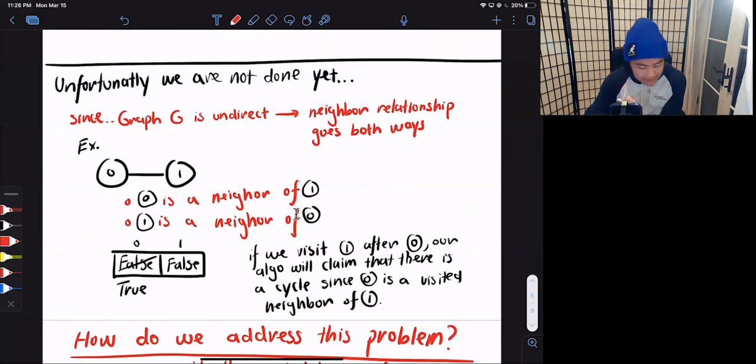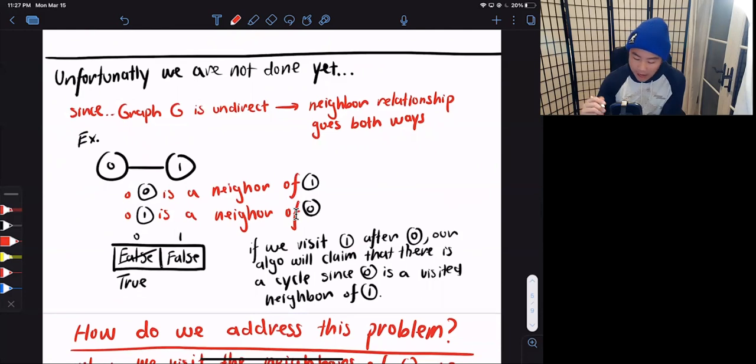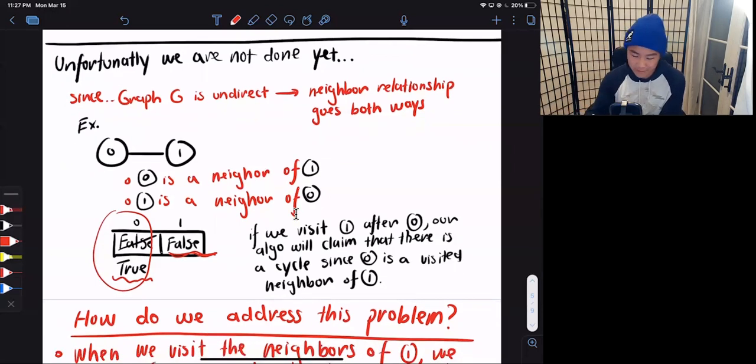And so this causes an issue for our algorithm. Because if we visit 1 after we visit 0, our algorithm will claim that there is a cycle because 0 is actually a visited neighbor of 1. We've already visited 0, and now we're visiting 1. And when we're visiting 1, we now check back at 0 because 0 is one of the neighbors of 1. And this array will tell us that we have already visited 0. Therefore, our algorithm would actually tell us this is a cycle when it's not.